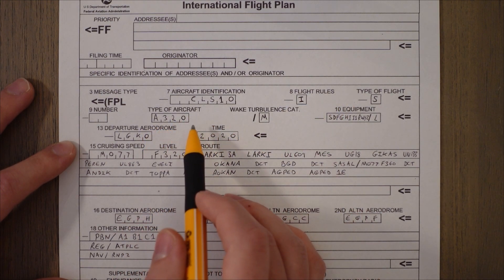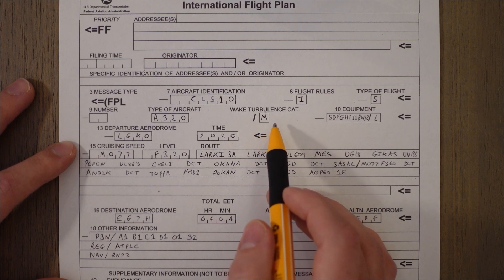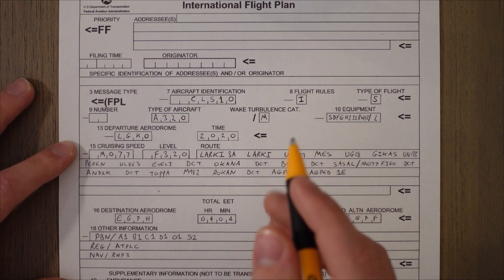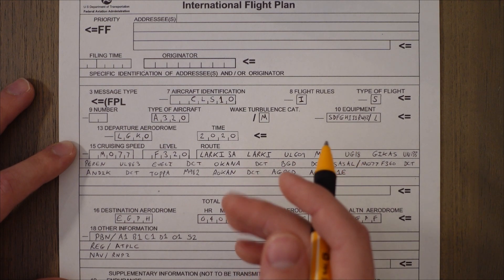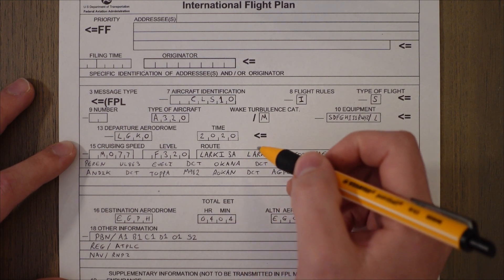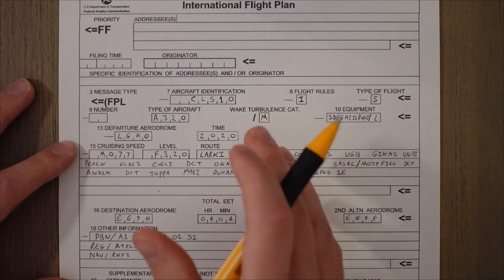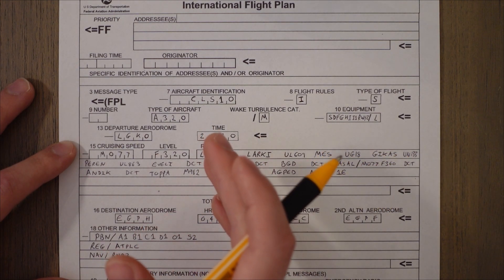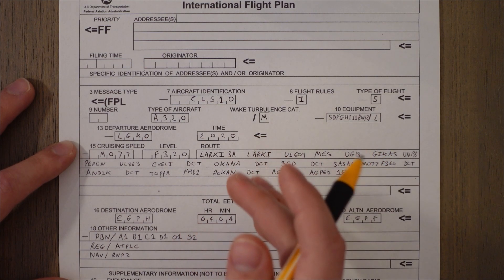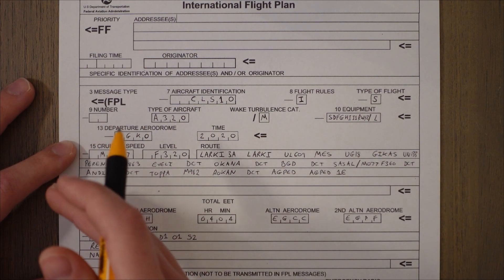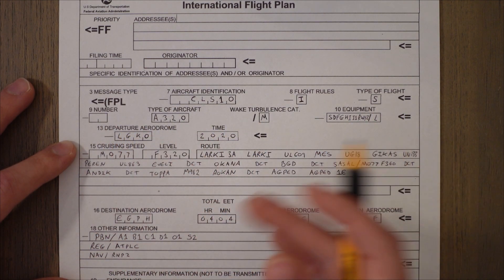And then next you have the wake turbulence category. This is based off the maximum certified takeoff mass of the aircraft. In our case M stands for medium. This covers all aircraft from 7,000 to 136,000 kilograms. L would indicate it's lighter than this and H would indicate heavier and you also get J for a super heavy A380.